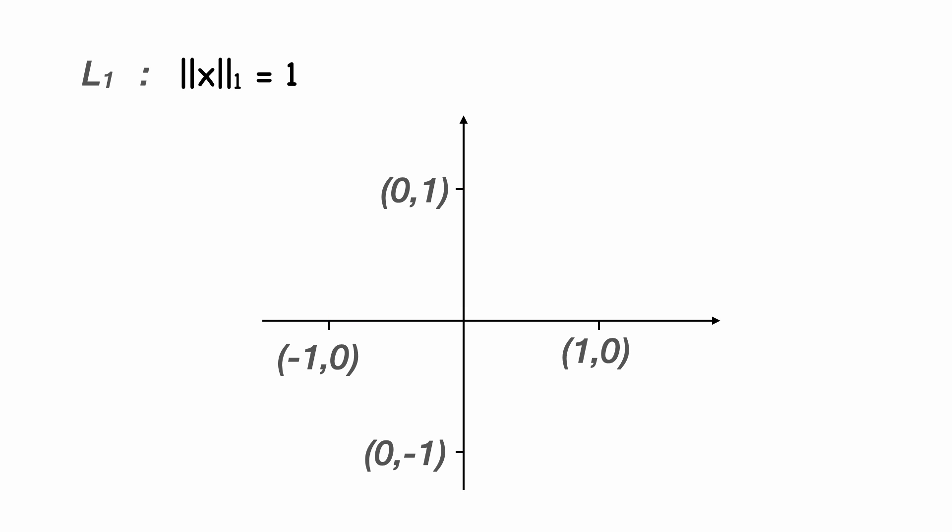To find the rest of the vectors with an L1 norm of 1, we can go along one axis an amount. Let's say going up the y axis by 0.9. Then we recognize that there's still 0.1 to account for.